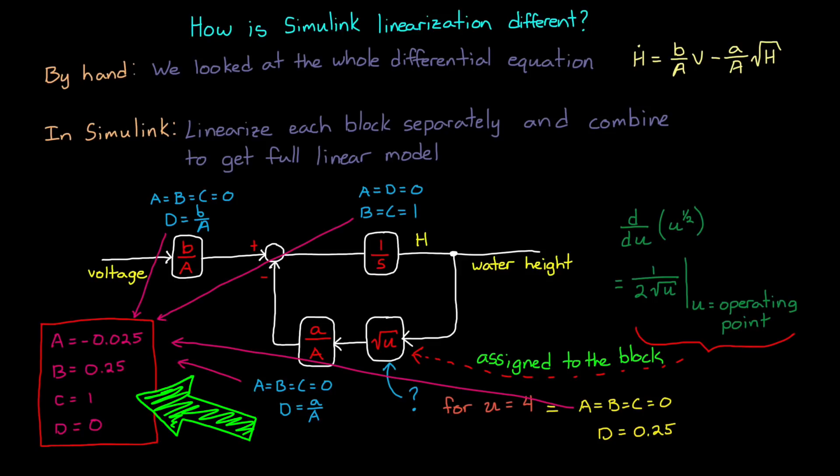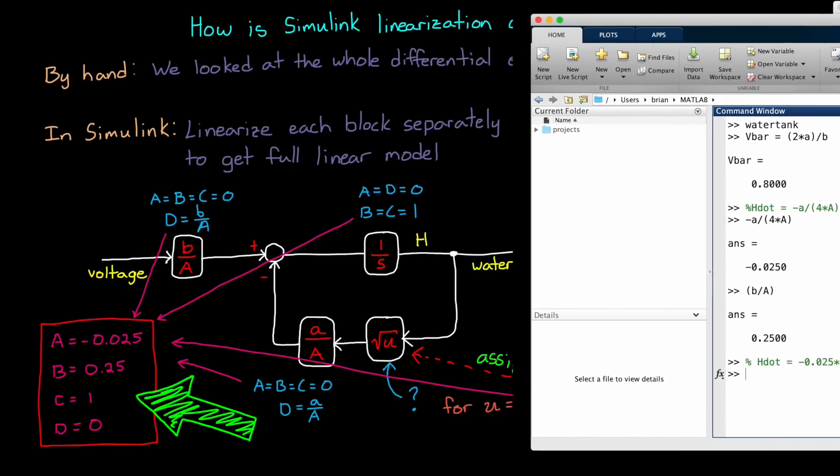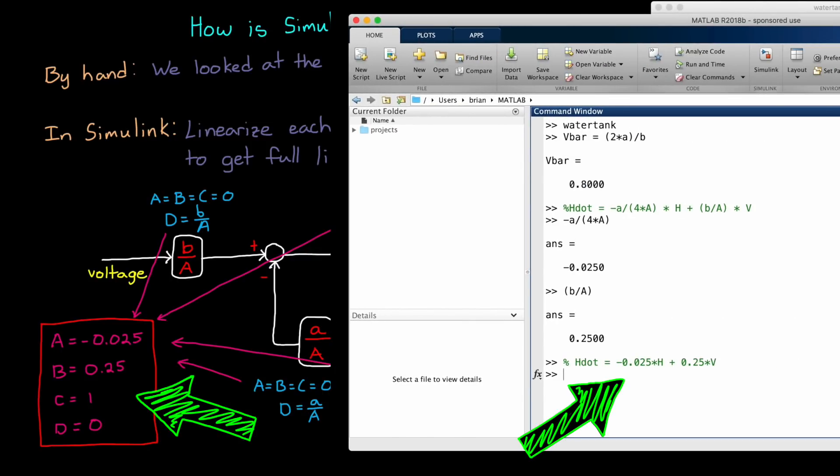Alright. The model Simulink ended up with by linearizing each individual block and combining them is exactly the same model we created by hand. The reason it's exact is because the one nonlinear block had an analytically derived Jacobian, so there were no errors introduced through the approximations of any kind, which is pretty awesome I think.